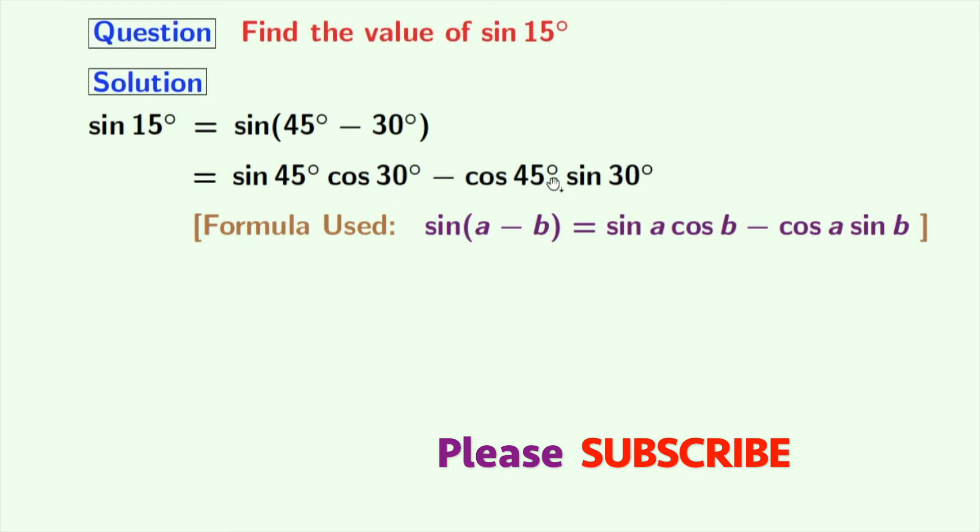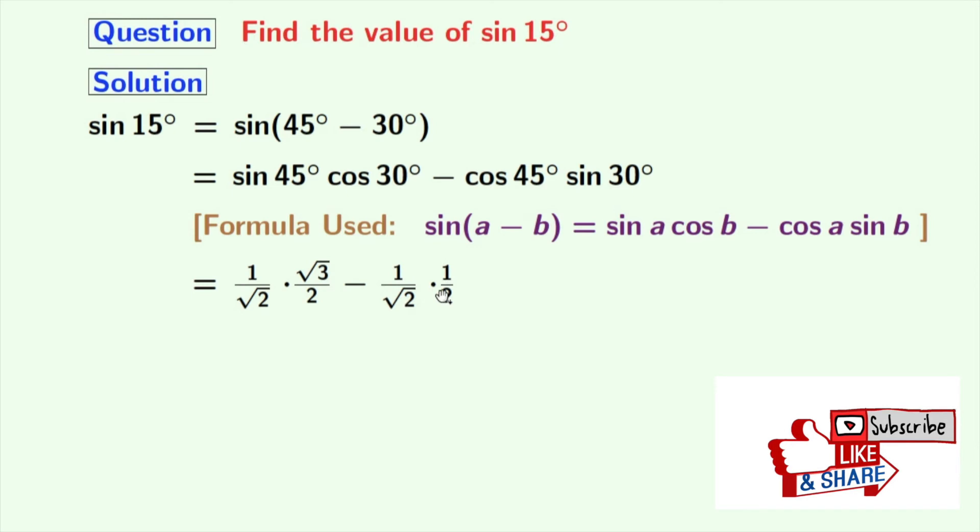Now we will put the values of sin and cosine functions involved here. Doing that we get sin 45 as 1 by root 2, cos 30 as root 3 by 2, cos 45 is again 1 by root 2, and sin 30 is 1 by 2.